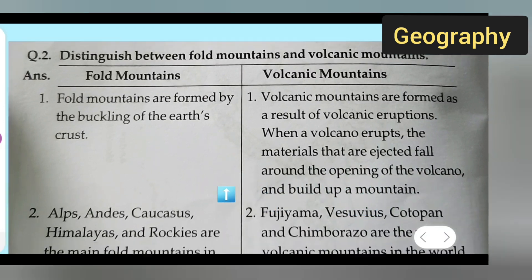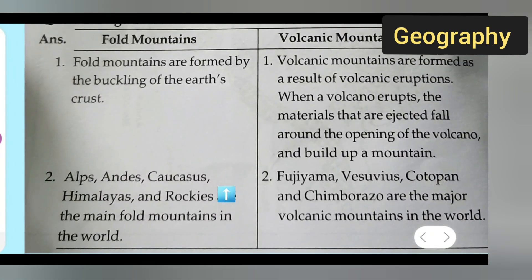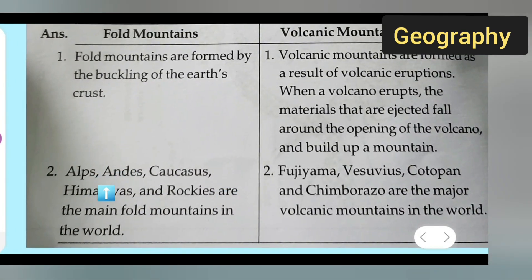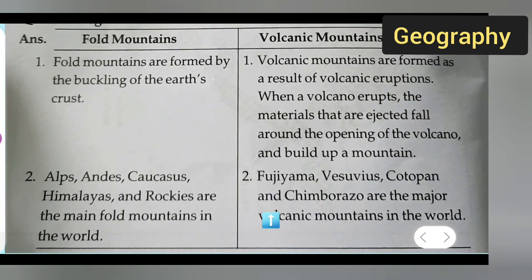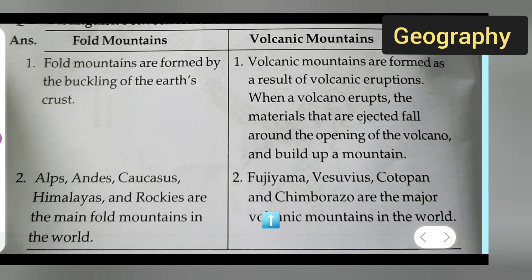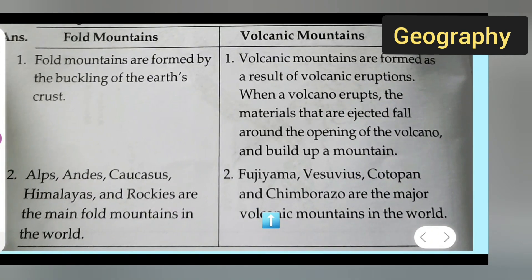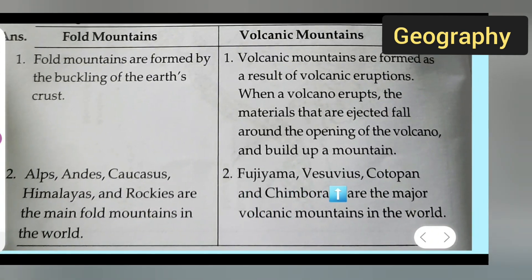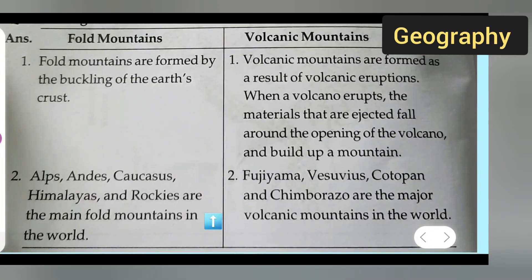Second point under fold mountains: the Alps, the Himalayas, and the Rockies are the main fold mountains in the world. Second point under volcanic mountains: Fujiyama, Vesuvius, Cotopaxi, and Kilimanjaro are the major volcanic mountains in the world.